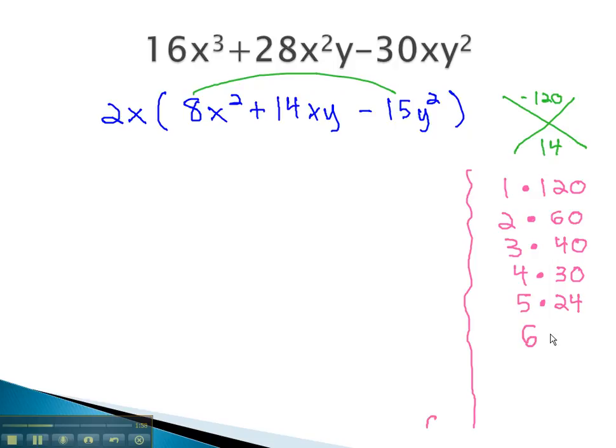6 goes into 120 20 times. Notice, we can use 6 and 20 to get 14 if the 6 were negative. This works because we need them to multiply to a negative 120. Our numbers are negative 6 and 20.